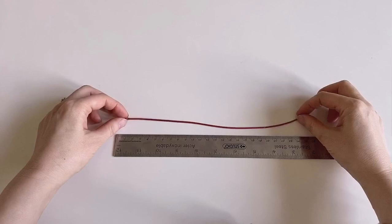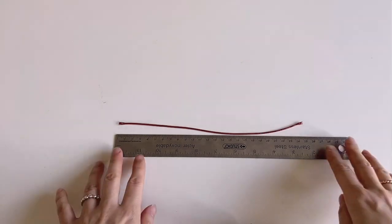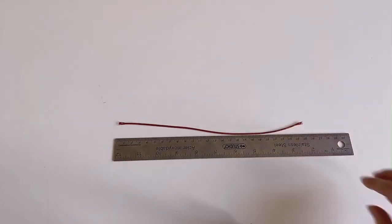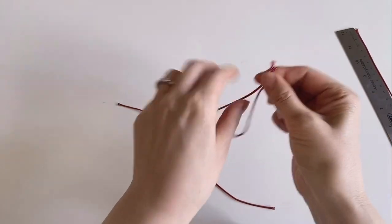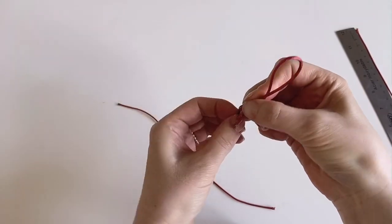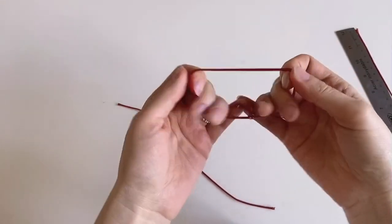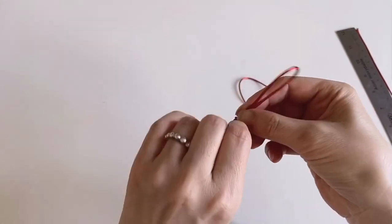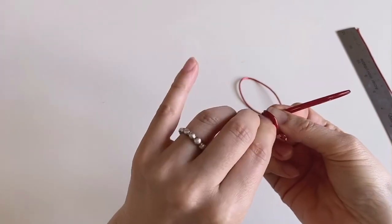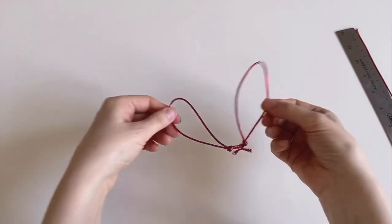For the elastic cords, you need to cut it at least 25 to 30 centimeters long so that when you tie it, it wouldn't cut too short. So you need to prepare two pieces and just tie each end like this.